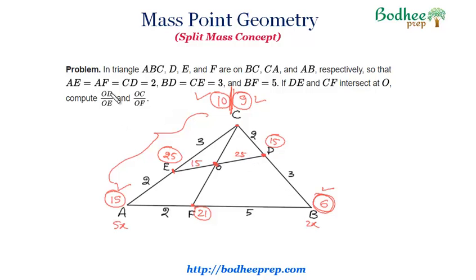So you can see that this particular ratio we have identified and that is OD over OE would be 25 by 15 or on further simplification we can say that it is 5 by 3. So the total mass at this particular point O would be 25 plus 15 which is 40.